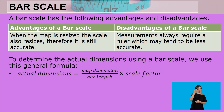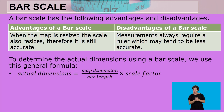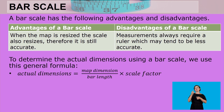The disadvantage is that measurements always require a ruler, which may tend to be less accurate. You always need a ruler when working with a bar scale because you first have to measure the distance given on the plan, and you have to measure the bar length as well, which gives you the scale factor. Sometimes that may tend to be less accurate.